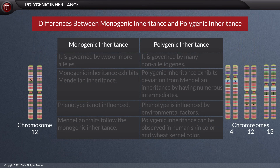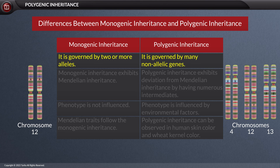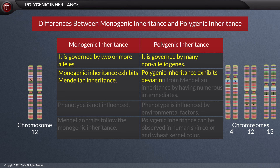Now let us compare monogenic inheritance with polygenic inheritance for better understanding. Monogenic inheritance is governed by two or more alleles, while polygenic inheritance is governed by many non-allelic genes. Monogenic inheritance exhibits Mendelian inheritance, while polygenic inheritance exhibits deviation from Mendelian inheritance by having numerous intermediates.